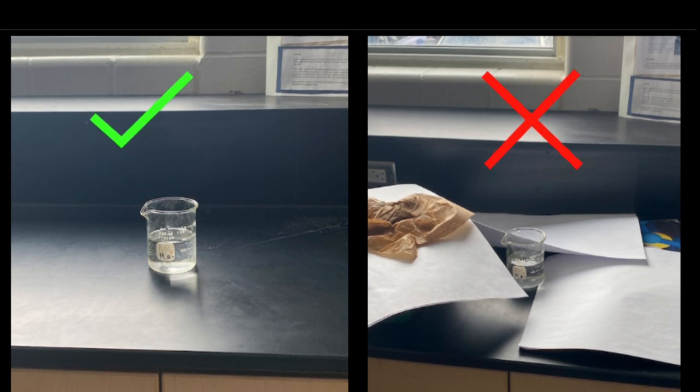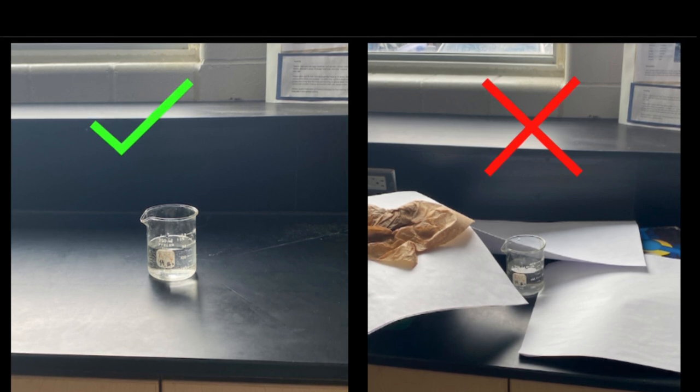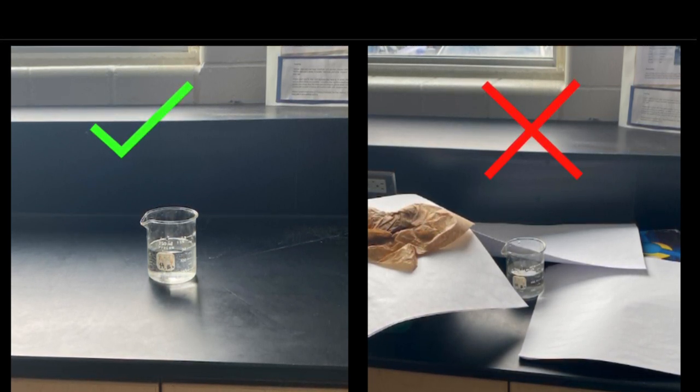A beaker should be used in an open space and it should not be obstructed. In cases where elements contain toxic fumes, you will be notified and will use a fume hood.